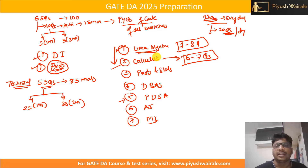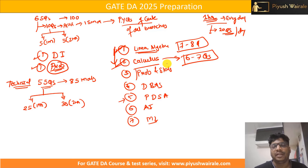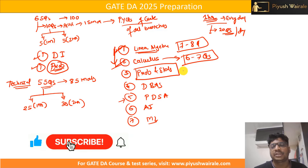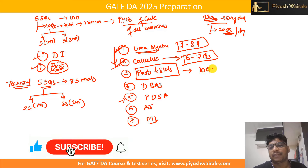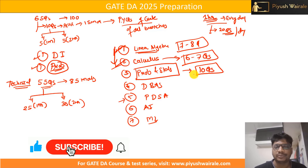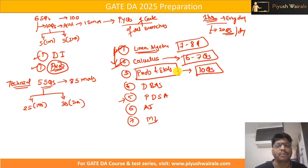The same pattern was observed in the GATE DA 2024 exam. Once you complete linear algebra and calculus, go for probability and statistics — a very important topic. You can expect around 10 questions from this particular topic. If you see the previous year GATE DA paper, the same number of questions was there for probability and statistics, so you can expect the same next year as well.